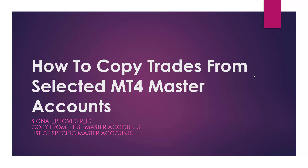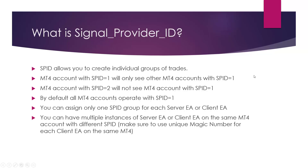So what is the signal provider ID? Signal provider ID, or SPID for short, allows you to create individual groups of trades. You set which server EA or client EA belongs to which group. So you can set all your MetaTrader accounts into different separate groups, and this way tell which client EA can see which server EA. For example, if you set a MetaTrader account to use SPID 1, it will only see other MetaTrader accounts with the same SPID of 1.